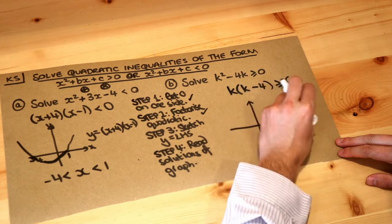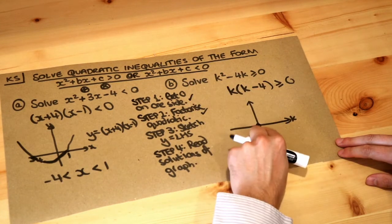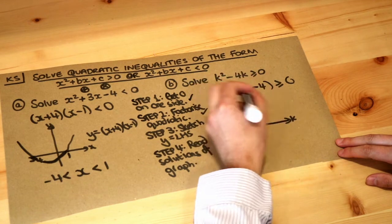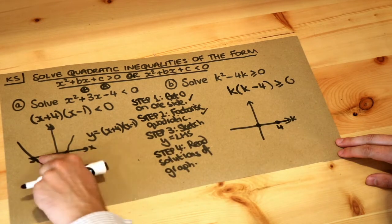So this is k instead of x. Now we imagine we're solving this equal zero. So either k is zero, which gives us this point here, or k minus four is zero so k is four. So we put four on the k axis, just like we put the minus four and one on the x axis here.